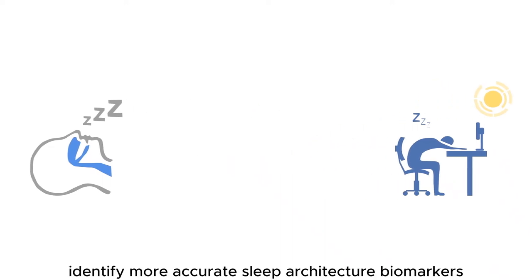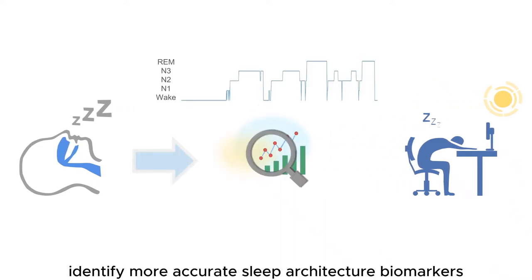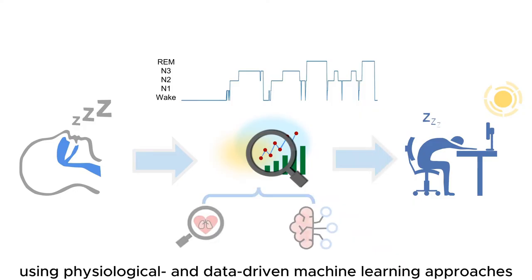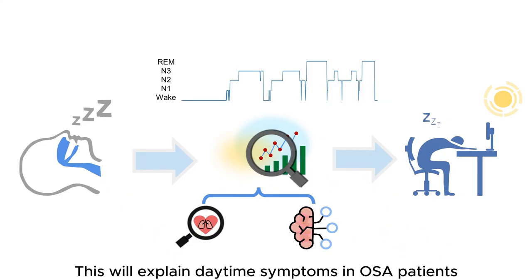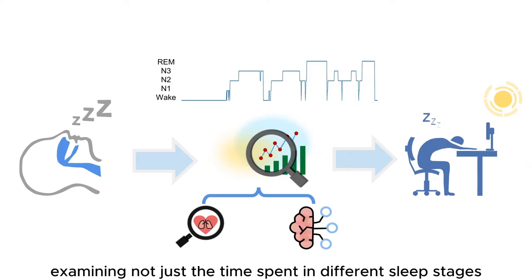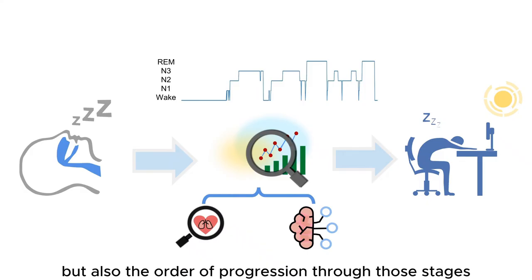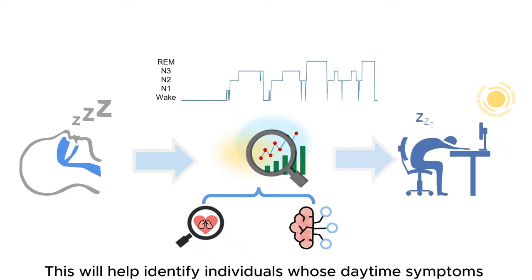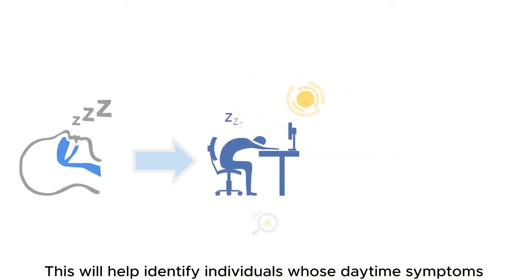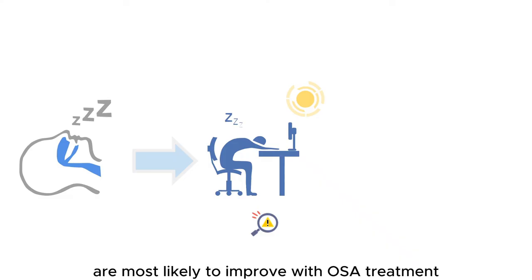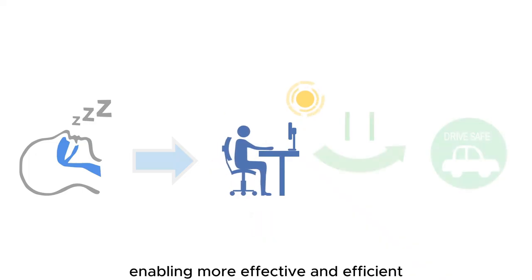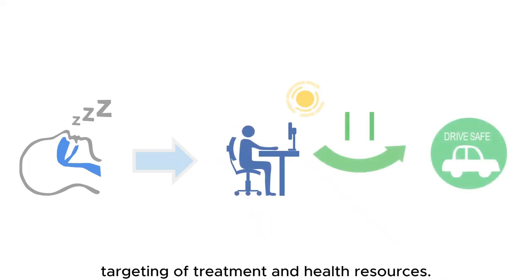My thesis objective is to identify more accurate sleep architecture biomarkers using physiological and data-driven machine learning approaches. This would explain daytime symptoms in OSA patients, examining not just the time spent in different sleep stages, but also the order of progressions through those stages. This will help identify individuals whose daytime symptoms are most likely to improve with OSA treatment, enabling more effective and efficient targeting of treatment and health resources.